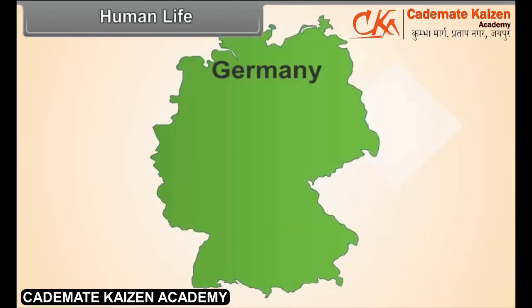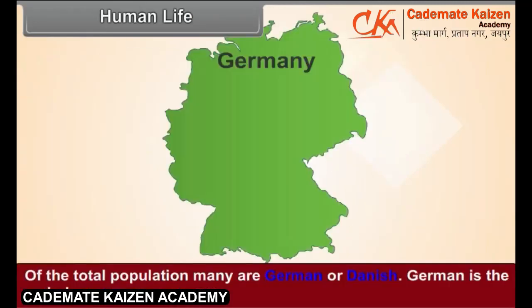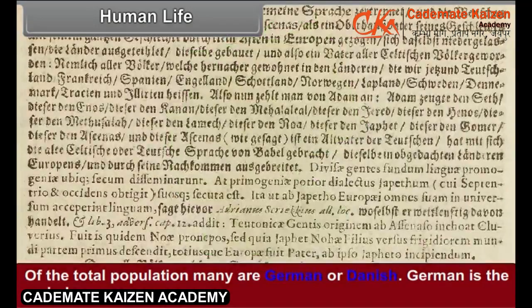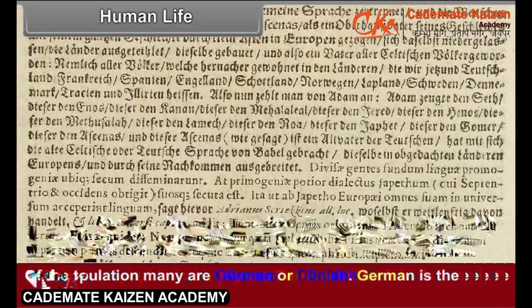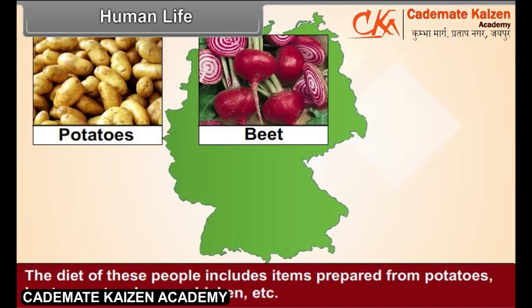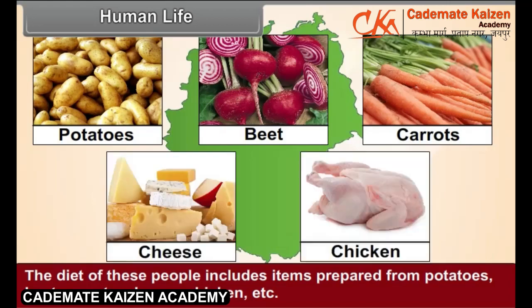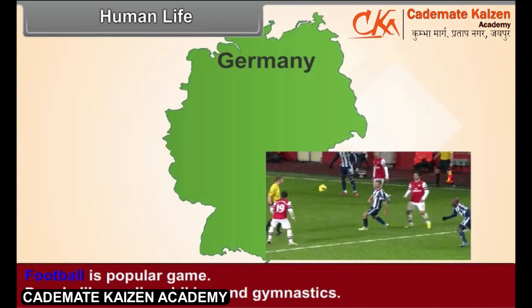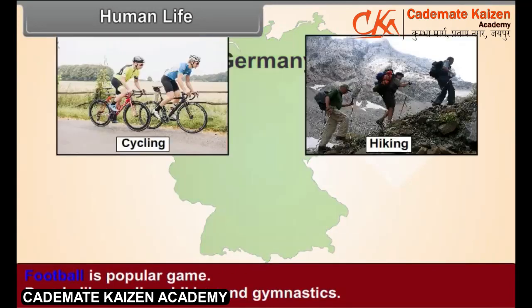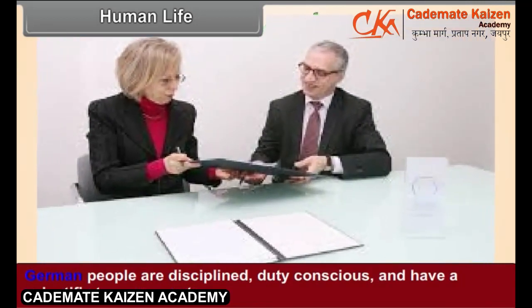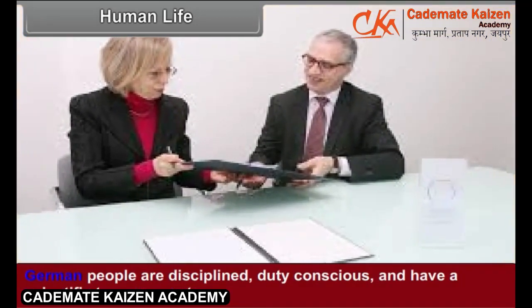Human Life. Of the total population, many are German or Danish. German is the main language. The diet of these people includes items prepared from potatoes, beet, carrots, cheese, chicken, etc. Football is a popular game. People like cycling, hiking, and gymnastics. German people are disciplined, duty-conscious, and have a scientific temperament.